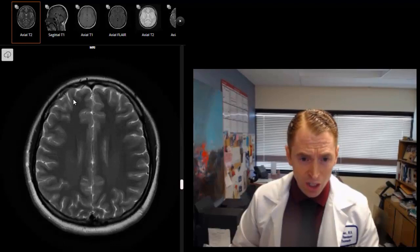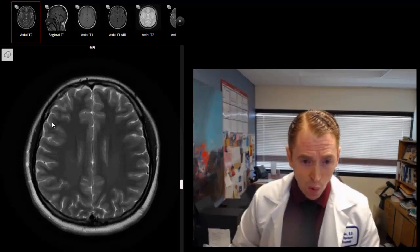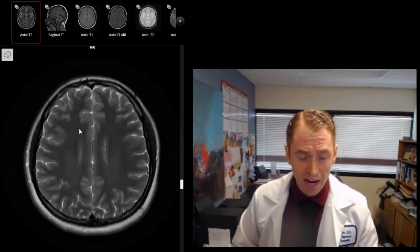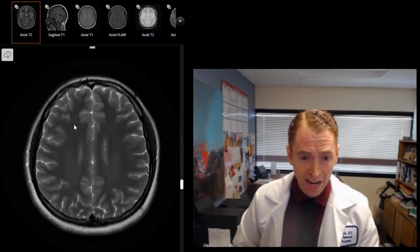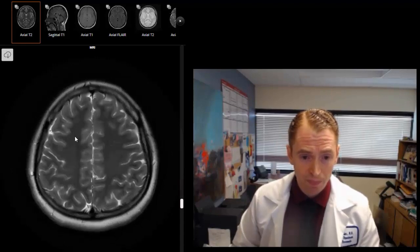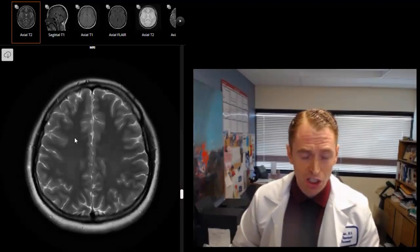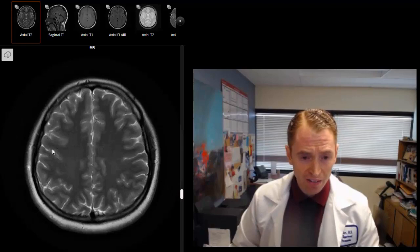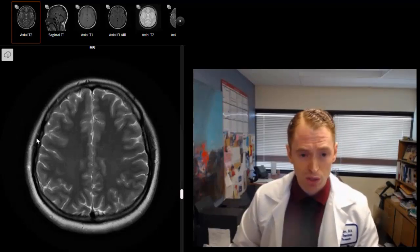On T2 MRI, the cortex or surface of the brain has cells in it and tends to look brighter. The underlying white matter which contains the nerve fibers with a myelin or fatty coating looks darker, and the reason is because of the fat in those tissues. You can see the gyri or finger-like projections of the brain and the sulci in between, which are fluid-filled gaps that contain cerebrospinal fluid.